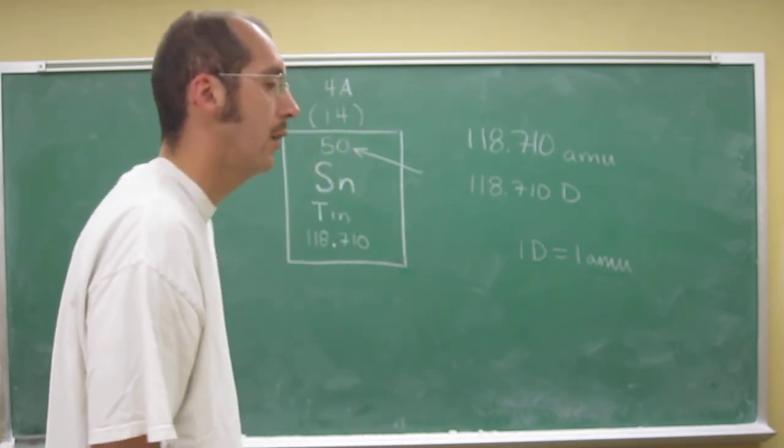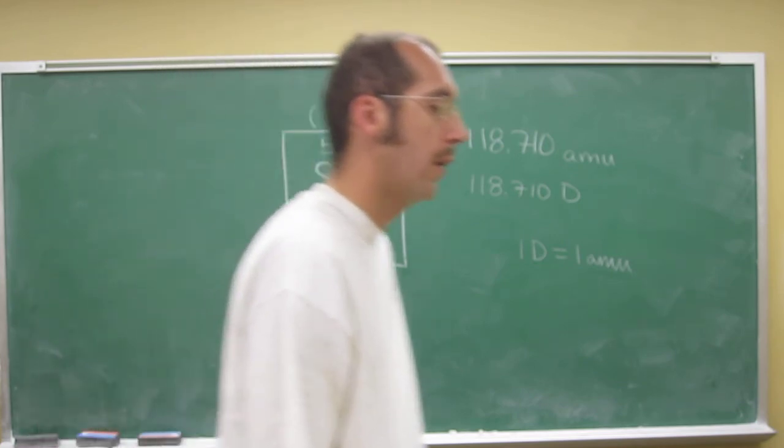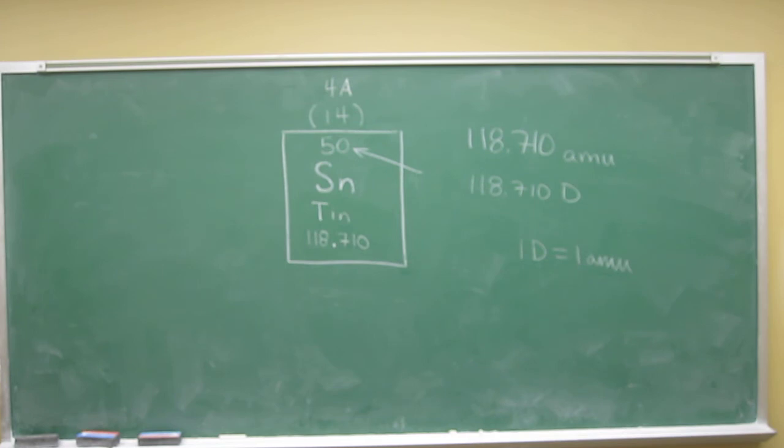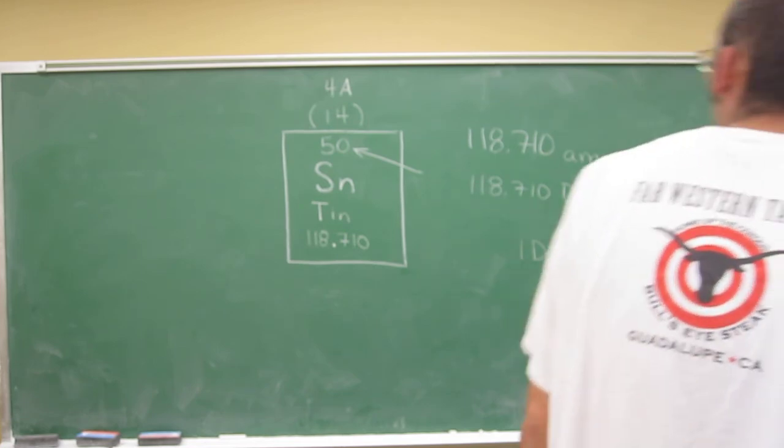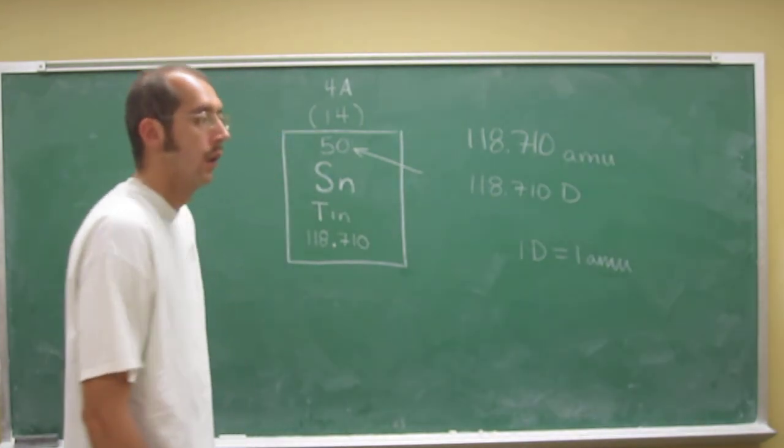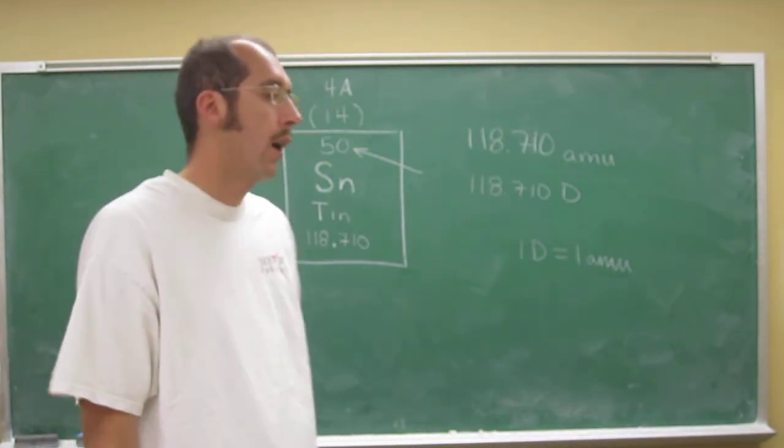Is tin a metal, metalloid, or nonmetal? It's right there near the staircase, but it's actually to the left of it, so it's actually a metal - a P-block metal.